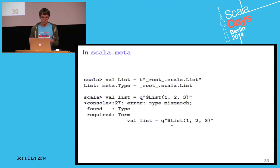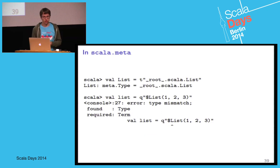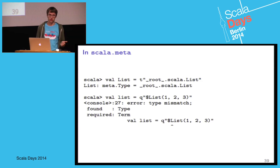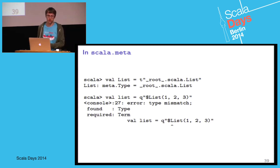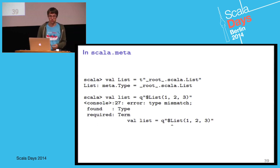Speaking of Scala.meta: since the Apply node used to represent list of one, two, three is strongly typed, we can catch this kind of error easily and early. We will just have a compilation error that says 'expected a type and got a term', which is quite reasonable and quite helpful.